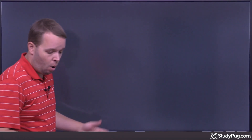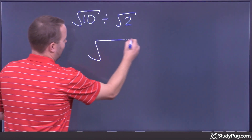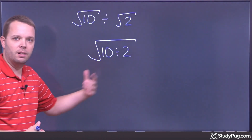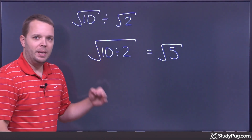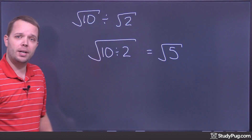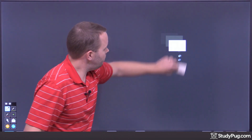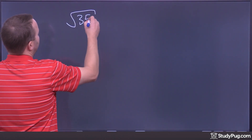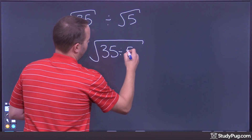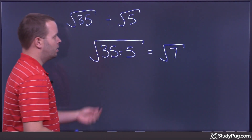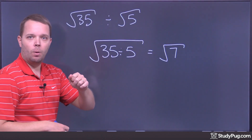The division rule applies to irrational radicals too. Root 10 divided by root 2 is the square root of 10 divided by 2, which is the square root of 5. Those values are identical — run them through a calculator if you want to prove it. Another example: the square root of 35 divided by the square root of 5 is the square root of 35 divided by 5, which is the square root of 7. When dividing radicals, just divide what's underneath the radical sign.